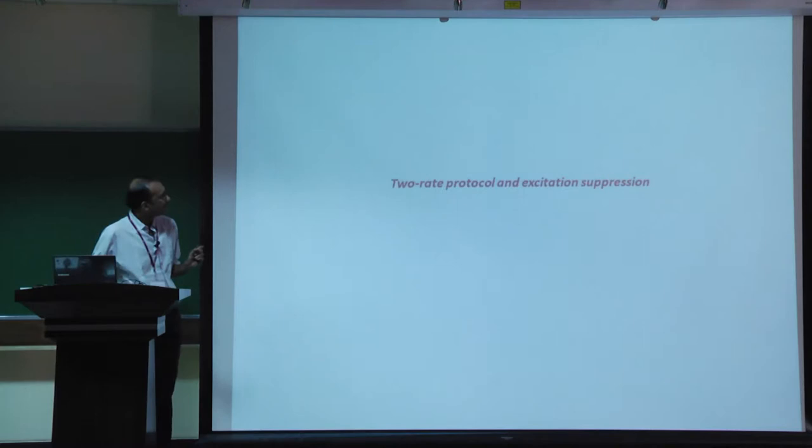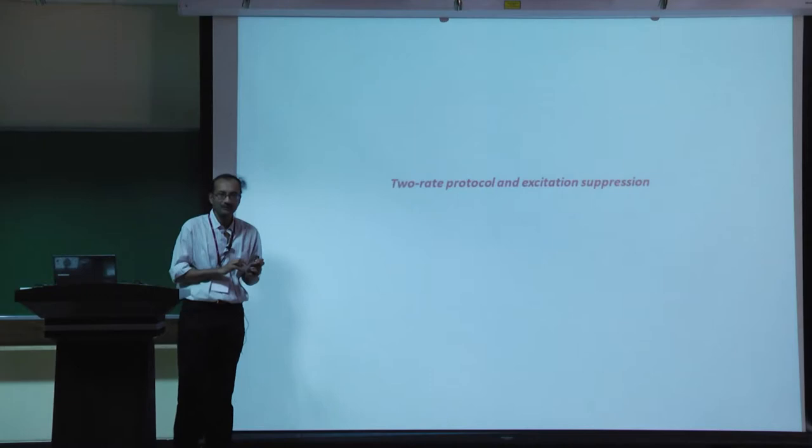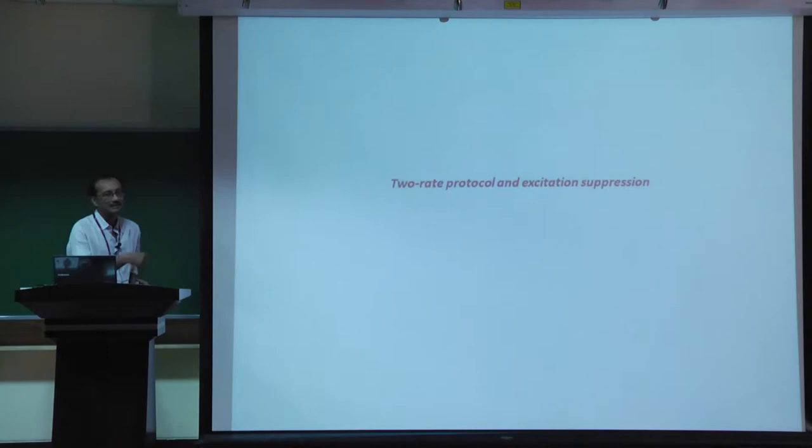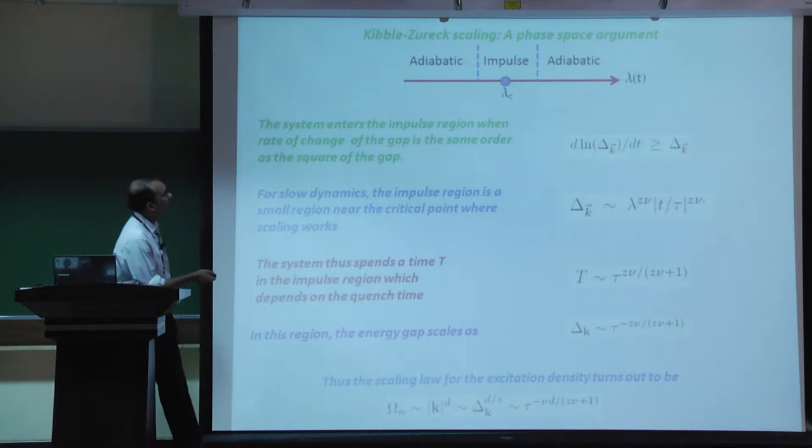What I am going to tell you about is a two-rate protocol where you vary two parameters of your system as a function of time in a straightforward manner. We want to show that this leads to excitation suppression. This is not optimal, but its advantage is that it is experimentally quite easily implementable.